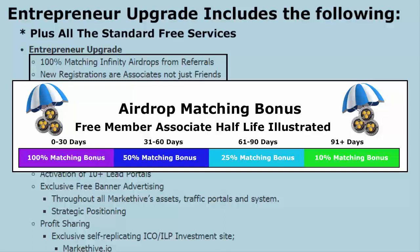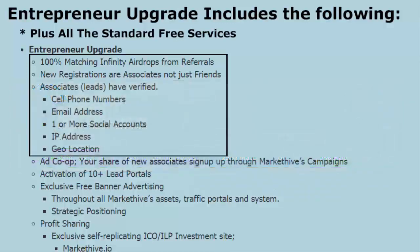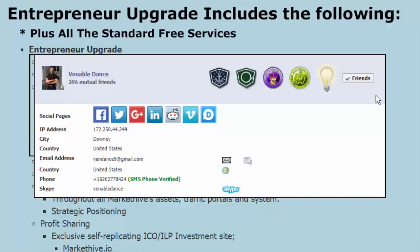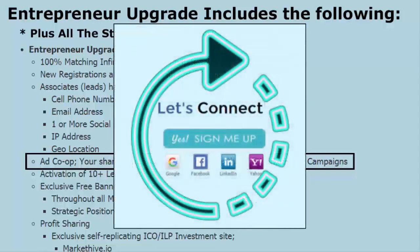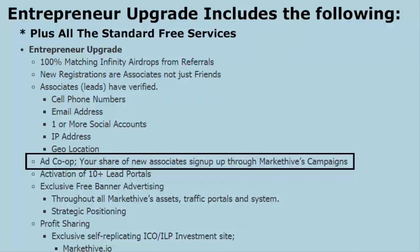We want you to try it out and see that it works. New registrations are associates — not just friends — and we've already identified that associate leads have verified cell phone numbers, email addresses, one or more social accounts, IP addresses, geolocation, etc. You also become a member in our ad co-op. Your share of new associates signing up through MarketHive's campaigns — I often run campaigns and send them to capture pages that I make, which rotate to the entrepreneurs. If I send them to markethive.net or markethive.com to the root domains, they all rotate to the entrepreneurs.